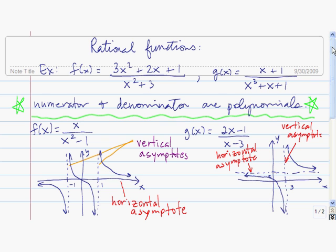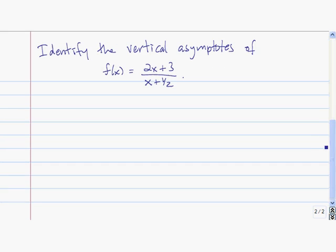Let's see an example where we find a vertical asymptote. The first thing we need to do is make sure that the numerator and denominator don't have any common factors. These are both linear terms and they don't have any common factors. The next thing is to find where the denominator equals 0, once we've canceled out any common factors. In this case, the denominator is equal to 0 at negative one-half. So the line x equals negative one-half is a vertical asymptote of this function.